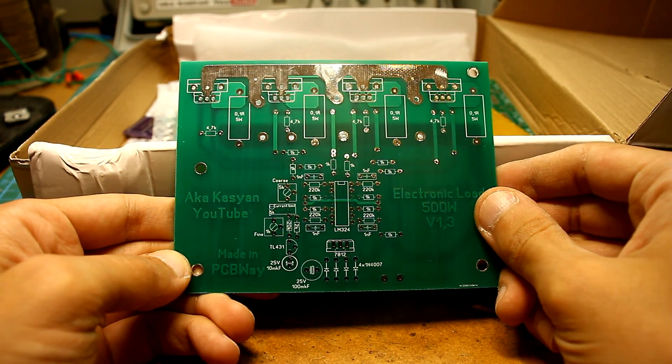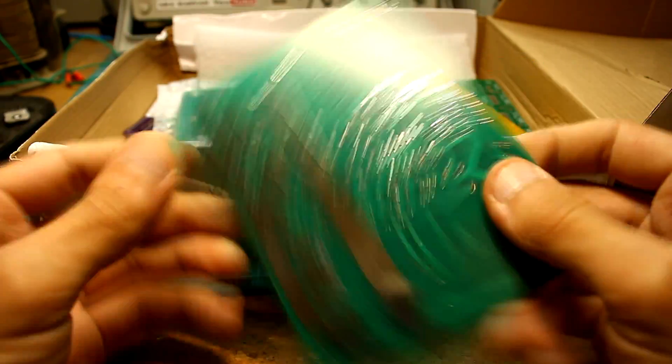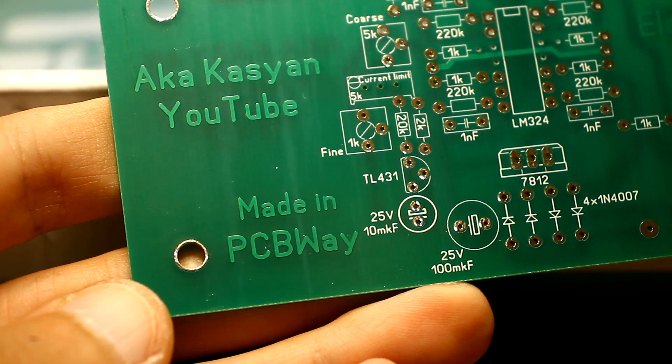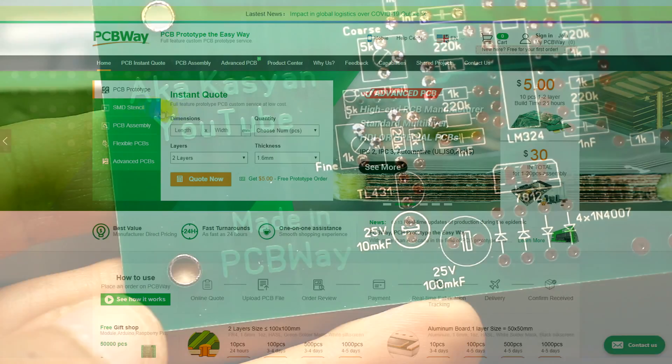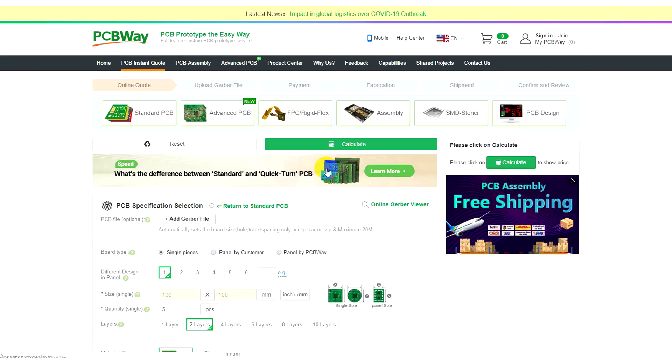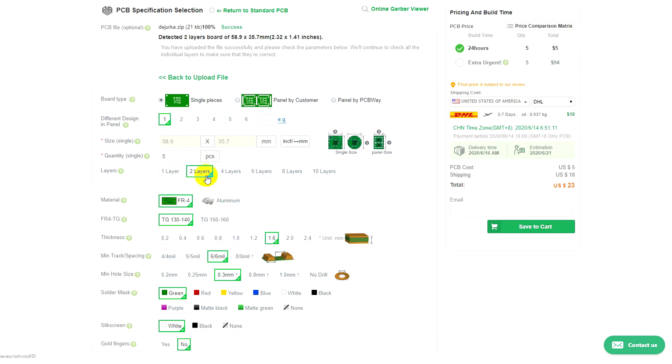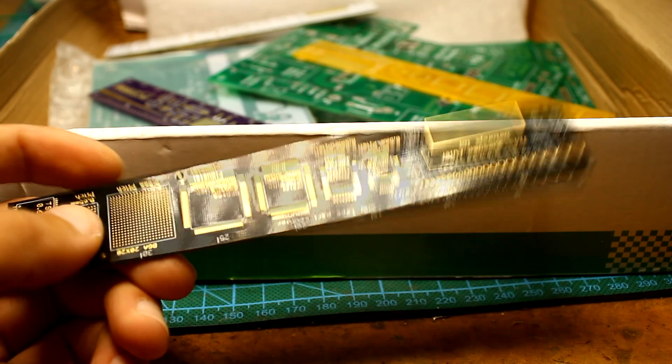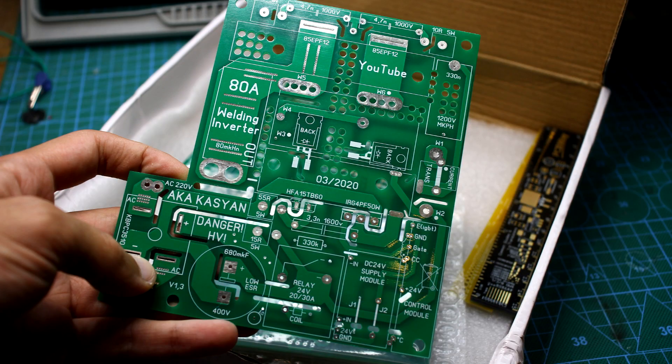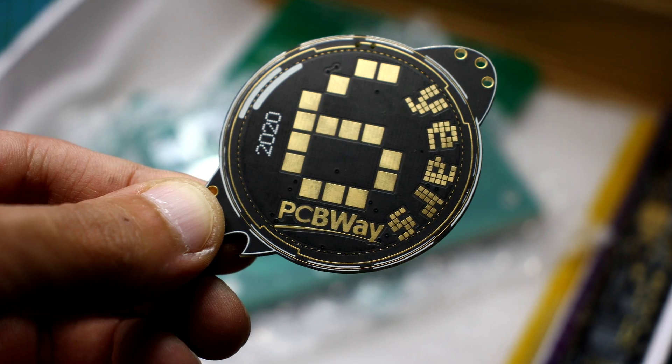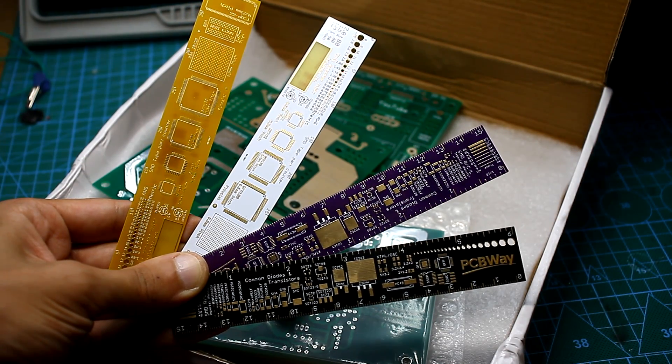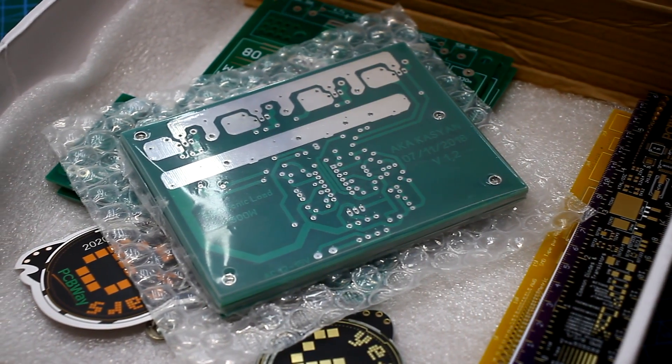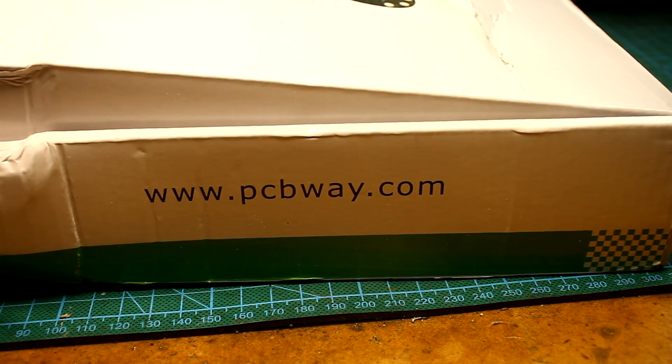Do you want your homemade products to be the same as the factory ones? Then you need high-quality printed circuit boards, which PCBWay will produce for you at affordable prices. Just download the source Gerber files from the company's website, select the options you need, pay for the order, and soon your boards will be ready. The complexity, number of layers, and board sizes can be anything. PCBWay often holds contests and sweepstakes. Follow the news to keep track of the events. We were personally convinced of the quality. Try it too! The link is in the description.